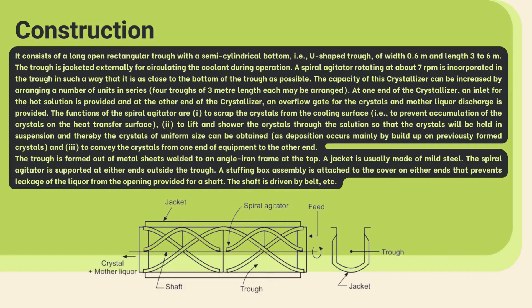Here you can see a pictorial image of the Swenson Walker crystallizer. It consists of a long U-shaped semi-cylindrical trough that is 0.6 meters wide and 3 to 6 meters long. An external jacket is provided all over the trough for circulation of cooling water during operation to cool the inner solution. A spiral agitator is placed inside the trough close to the bottom surface, rotating at around 7 RPM.